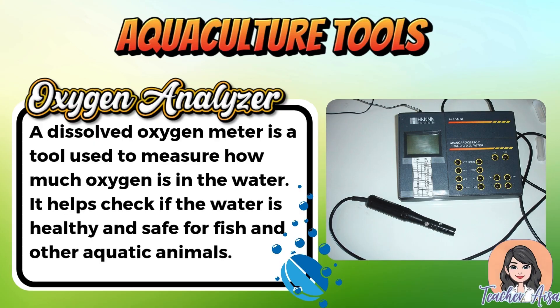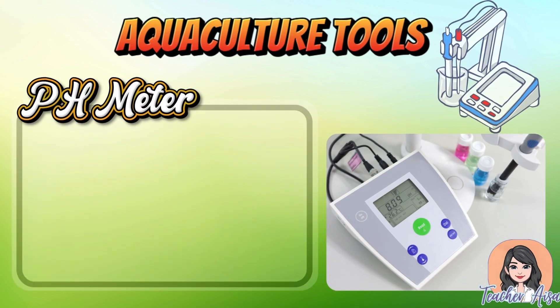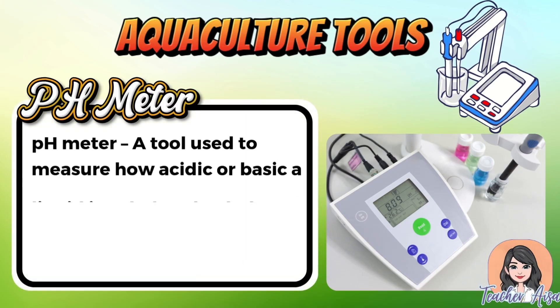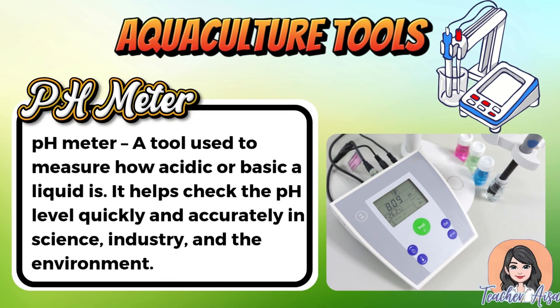A dissolved oxygen meter, also called an oxygen analyzer, is a device used to measure the amount of oxygen present in water, helping determine if the water has enough oxygen to support fish and other aquatic animals. A pH meter is a device used to determine whether a liquid is acidic or basic, providing quick and accurate readings useful in science experiments, industrial processes, and environmental testing.